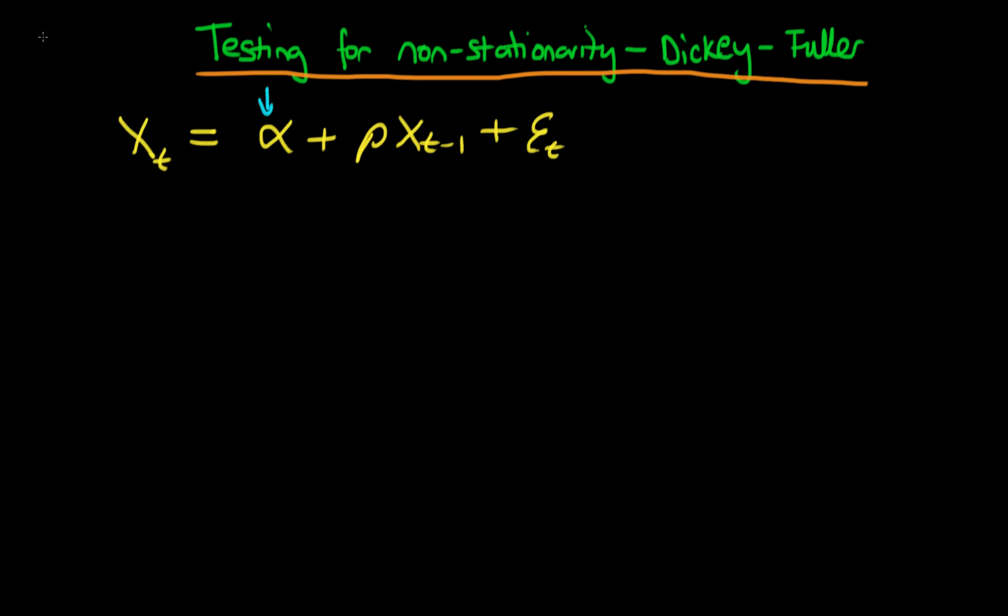Notice that I've included this alpha term here by default, so I'm not specifying whether alpha equals 0, in which case I just have a random walk, or alpha doesn't equal 0, in which case we have a random walk with drift. It turns out that this particular test doesn't require us to specify explicitly beforehand what type of random walk we're talking about.